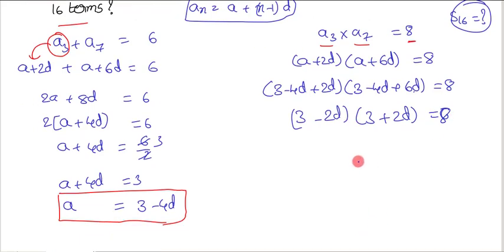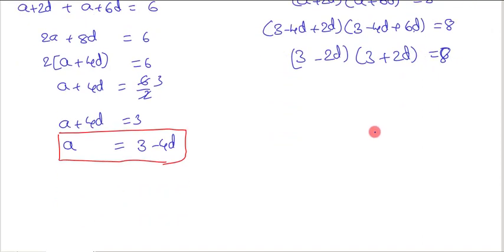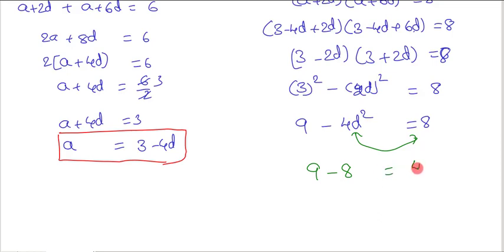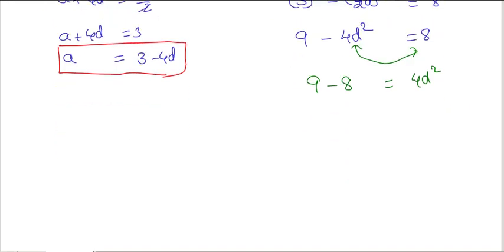Observing the left-hand side, it is in the form (a − b)(a + b), which equals a² − b². Applying that formula, 3² − (2d)² = 8, so 9 − 4d² = 8. Rearranging, 4d² = 9 − 8 = 1.